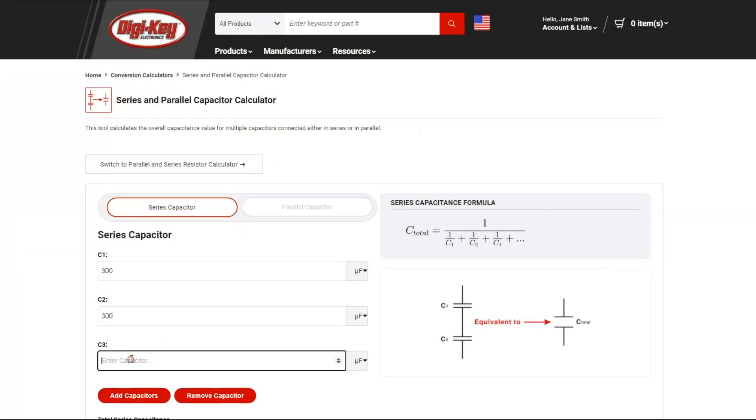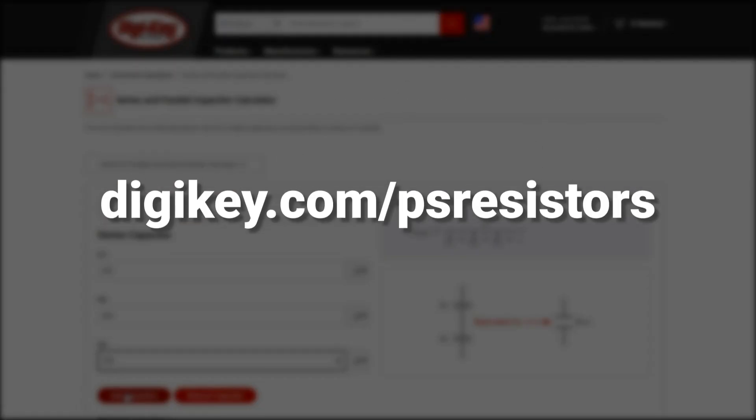Save some time and let Digikey's series and parallel calculator do all the work. Visit digikey.com/psresistors to get started.